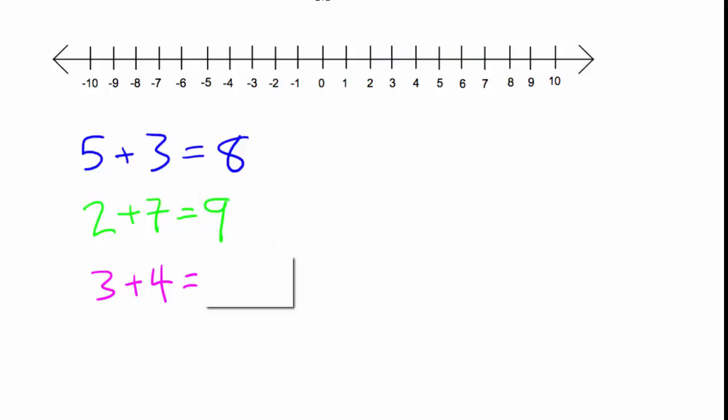Awesome. Now for the last example, we're going to start at three. So three plus four - we're going to move to the right four. One, two, three, four. So three plus four equals seven. Awesome.